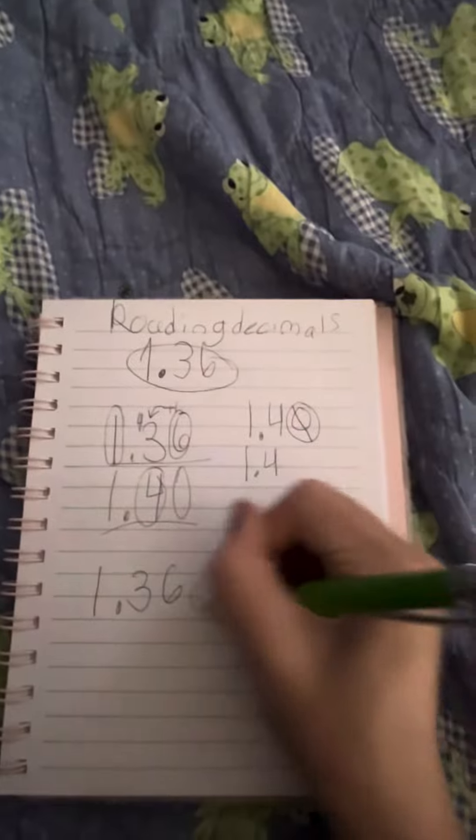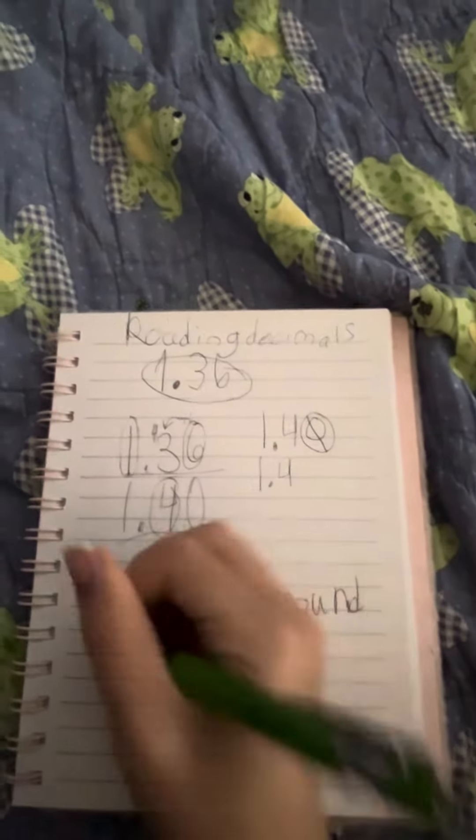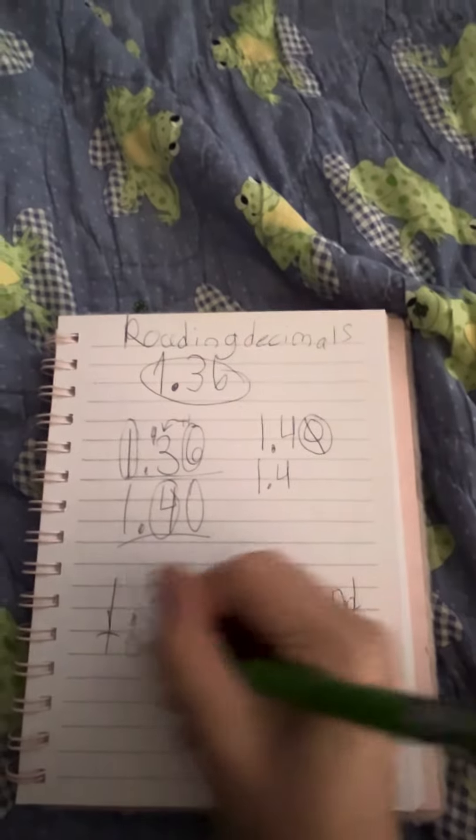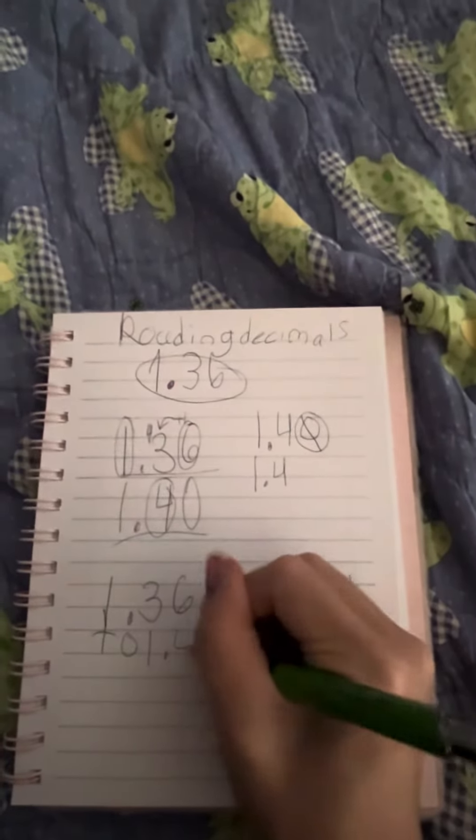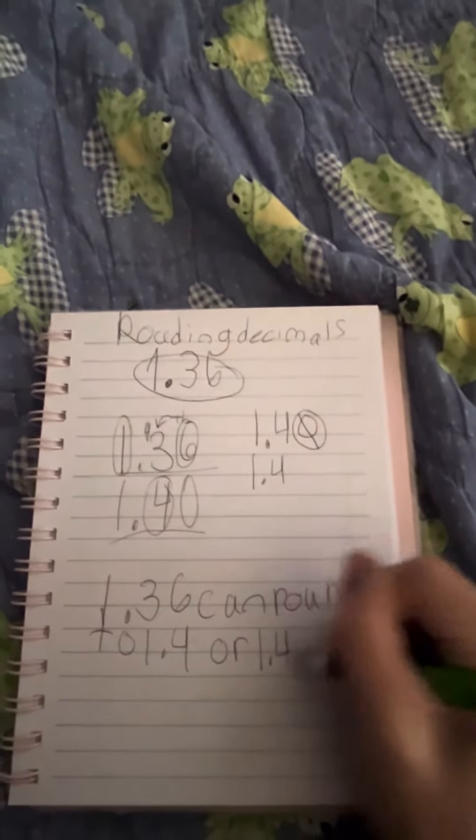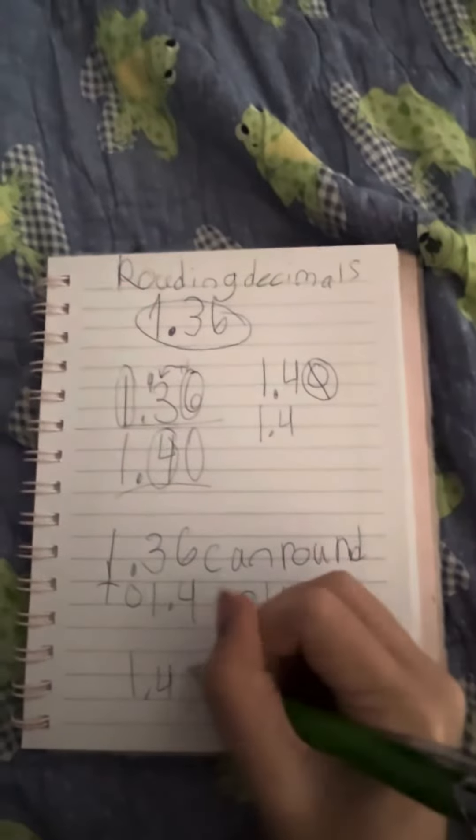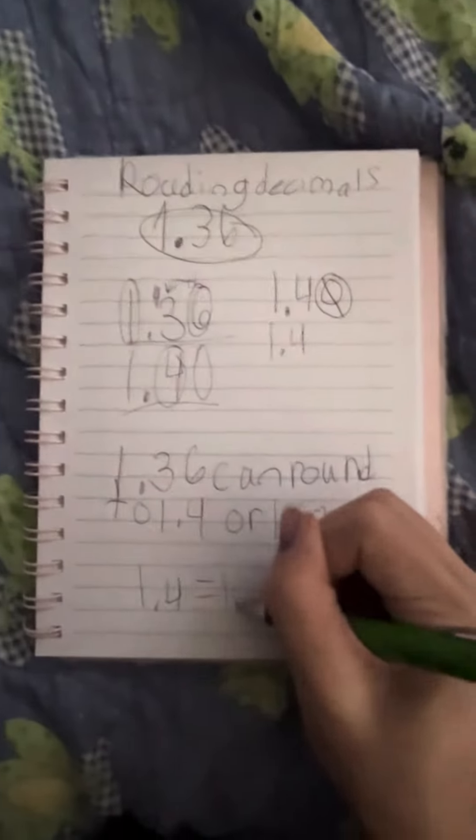So 1 and 36 hundredths can round to 1 and 40 hundredths. They still equal the same, just minus the 0.